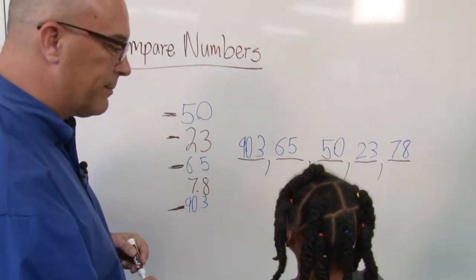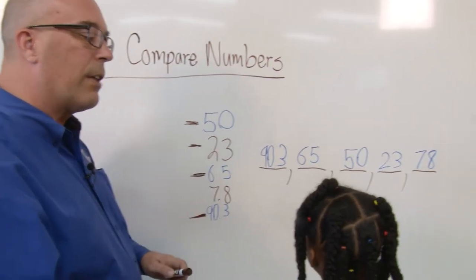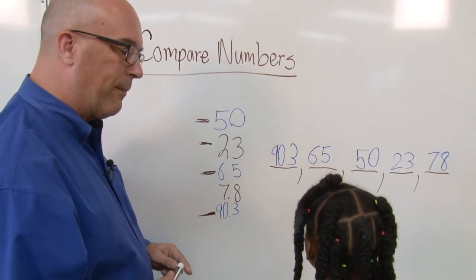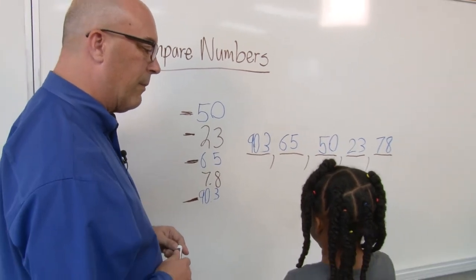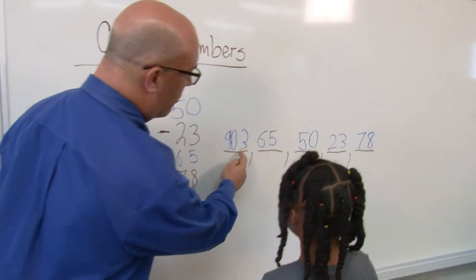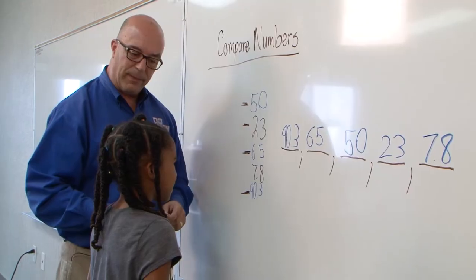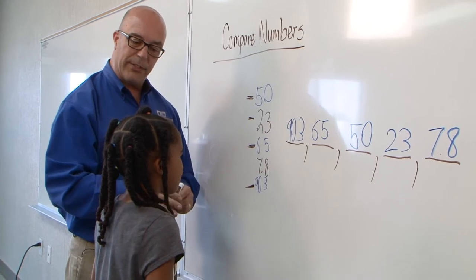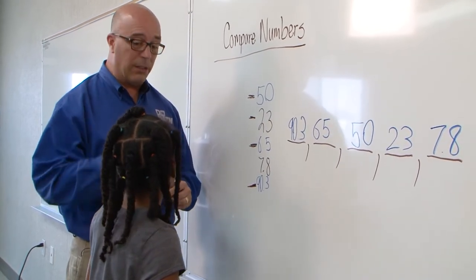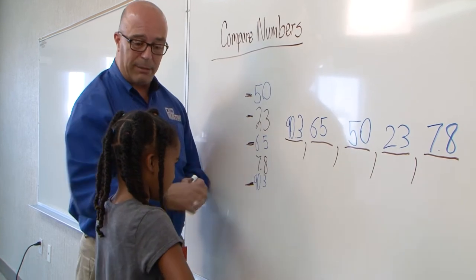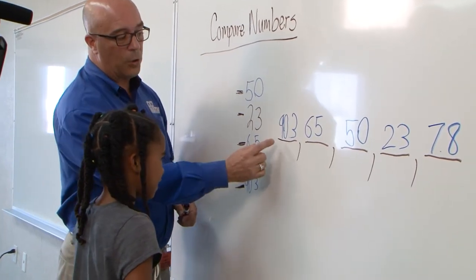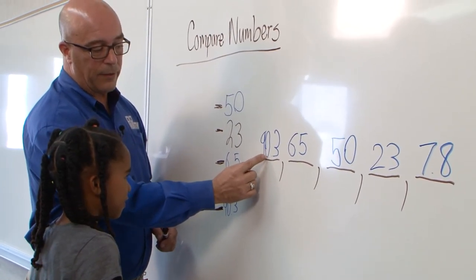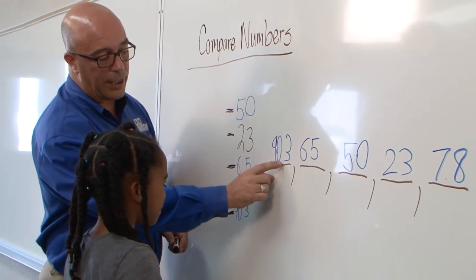What's the first number? 90.3. Do you know another way to say that? Because the decimal point means and. Have you guys done place value with tenths, hundredths, thousandths yet? Yes. You have? Yes. Okay. So, can you think of another way? Do you remember how that might be said? So, say the whole number first. What's the whole number? 90. 90. When you see a decimal point, you say the word... And.